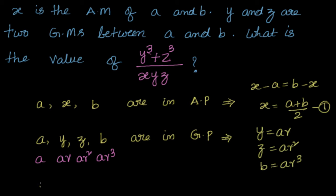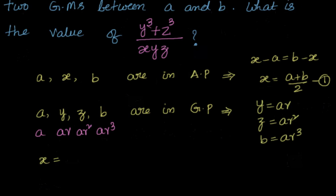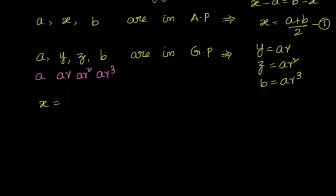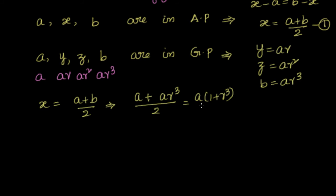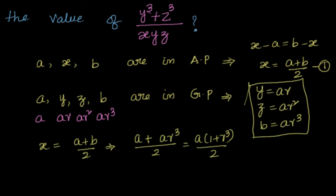We can write x equals a plus b divided by 2. Since a is a and b is ar³, that becomes a plus ar³ divided by 2, which equals a times (1 plus r³) divided by 2. Now we have enough information to find what we need.